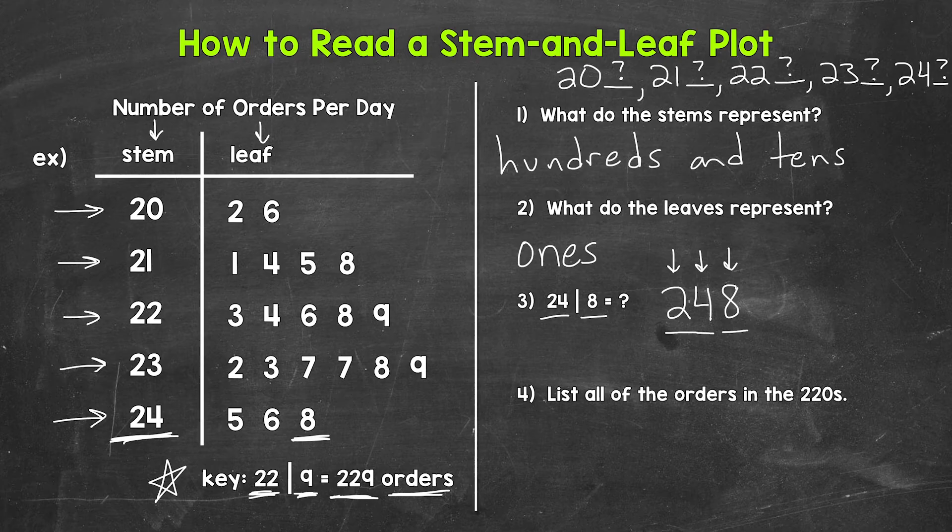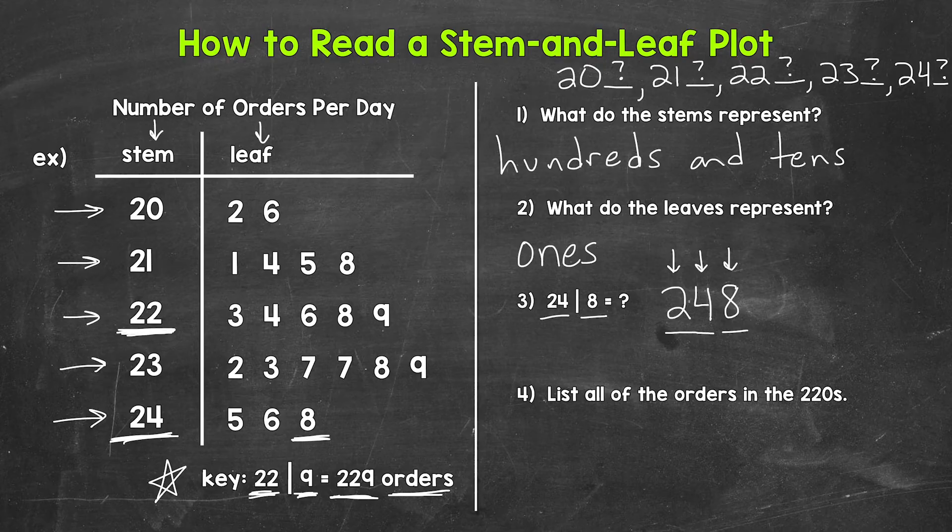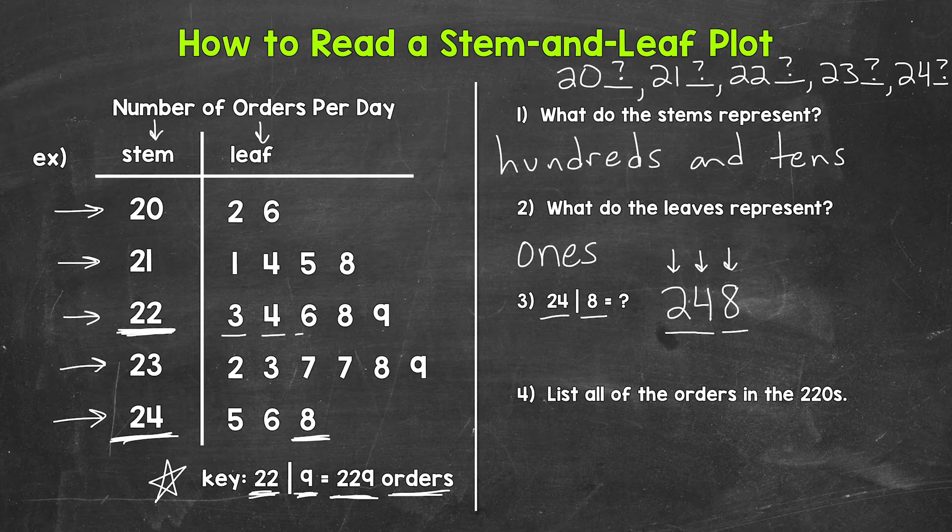And then lastly let's move on to number four where we have list all of the orders in the 220s. Well we need to look at the stem of 22 and put that together with the leaf of three, the leaf of four, the leaf of six, the leaf of eight, and the leaf of nine.